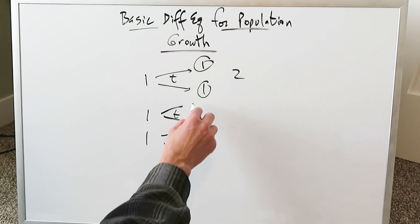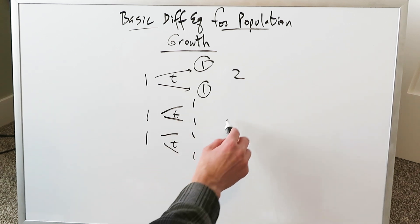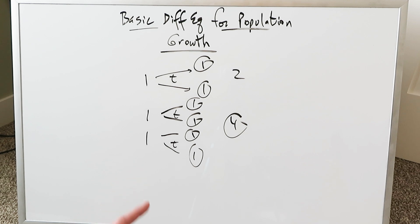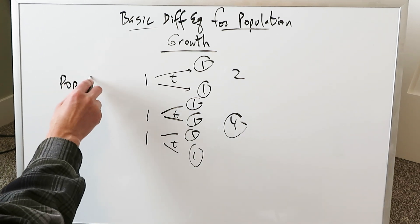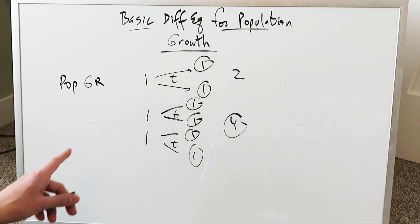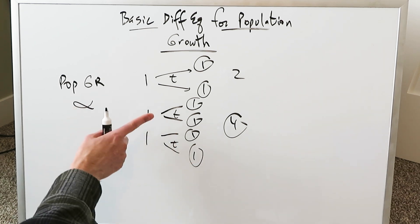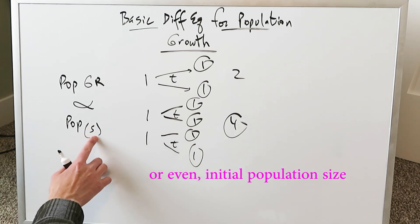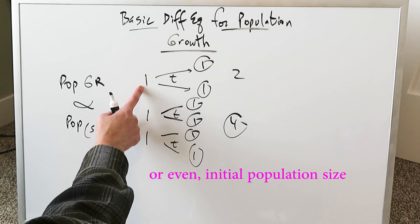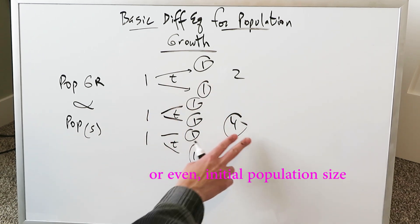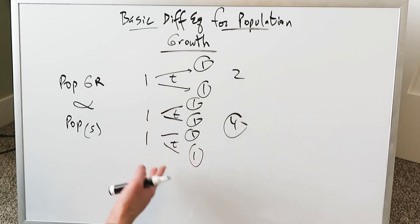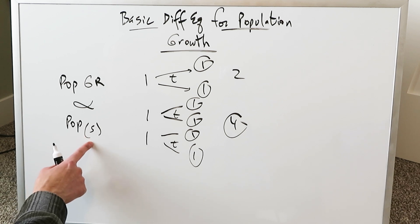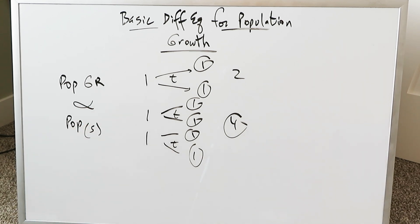When you examine it, you start with two but end up with four. What does that tell you? It tells you something very clearly. The population growth rate — the rate at which a population grows — is proportional, or directly proportional, to your population start. I started with one and ended with two; I started with two and ended with four.